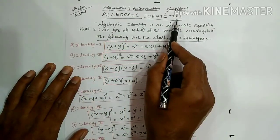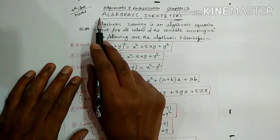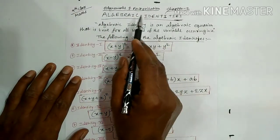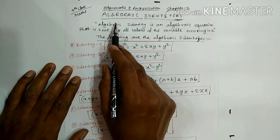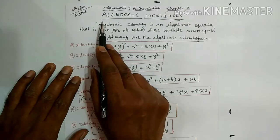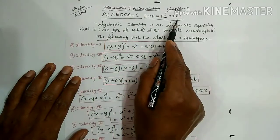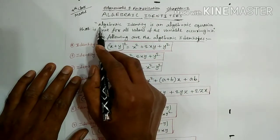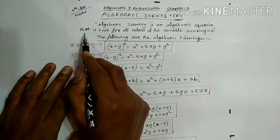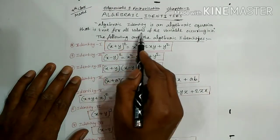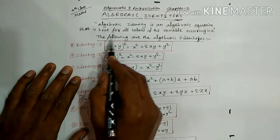Algebraic identities means it is an equation having LHS and RHS. If any number is substituted in the variables, the LHS should be equal to RHS. Those are called Algebraic Identities. The definition: an algebraic identity is an algebraic equation that is true for all values of the variable occurring in it.